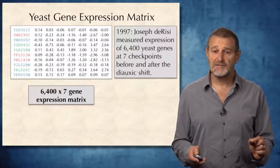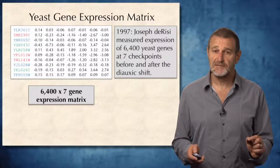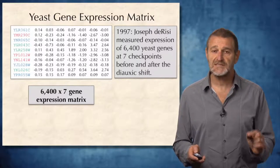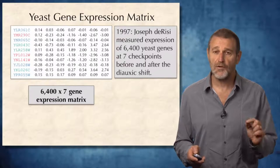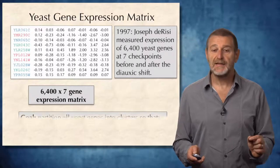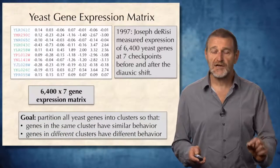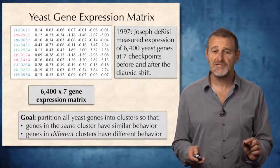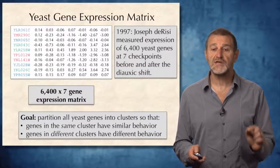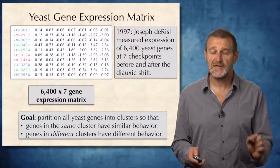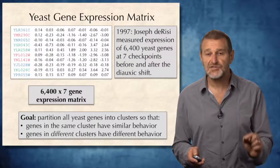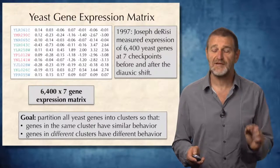In fact, in 1997, Joseph DeRisi constructed a much larger gene expression matrix by measuring gene expression for 6,400 yeast genes, nearly all yeast genes, before and after the diauxic shift. The goal he tried to achieve by using this gene expression matrix was to partition all yeast genes into clusters so that genes in the same clusters have similar behavior and genes in different clusters have different behavior.